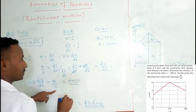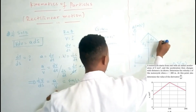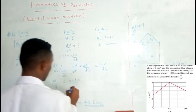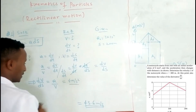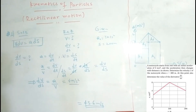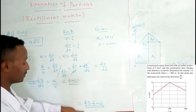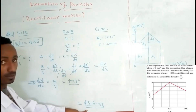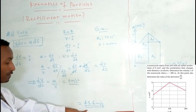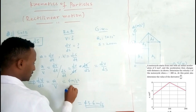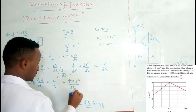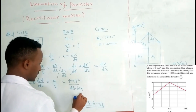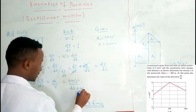The final velocity at this point has already been found: the final velocity is 36 meters per second. This is the answer for the first question.